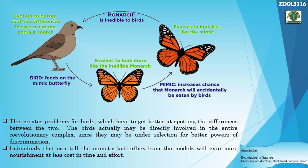The birds are directly involved in the entire co-evolutionary complex between the monarch, viceroy, and birds, as they are under selection pressure for better powers of discrimination. Individuals that can tell the mimetic butterflies from the models will gain more nourishment at less cost in time and effort. This is another very good example of co-evolution.